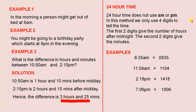24-hour time does not use AM or PM. In this method we only use 4 digits to tell the time. The first two digits give the number of hours after midnight, and the second two digits give the minutes. For example, 8:35 AM — the 08 tells you it is 8 hours after midnight, and the 35 is the extra 35 minutes.